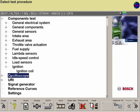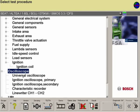In the oscilloscope menu of the FSA software, select Universal Oscilloscope.